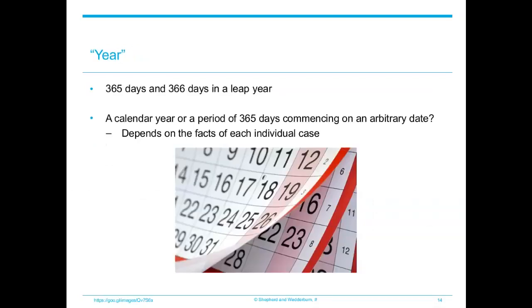For all practical and legal purposes, the duration of a year is 365 days and 366 days in a leap year. Whether the expression 'year' refers to a calendar year — January to December — or to a period of 365 or 366 days commencing on an arbitrary date, say 10th December to the 9th of December, will depend on the facts of each case. We normally come upon it when a lease continues from year to year by tacit relocation.